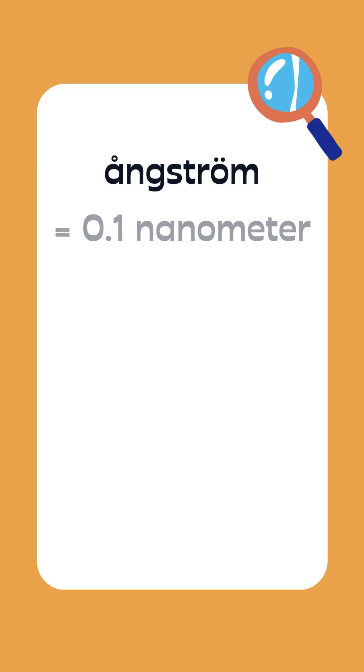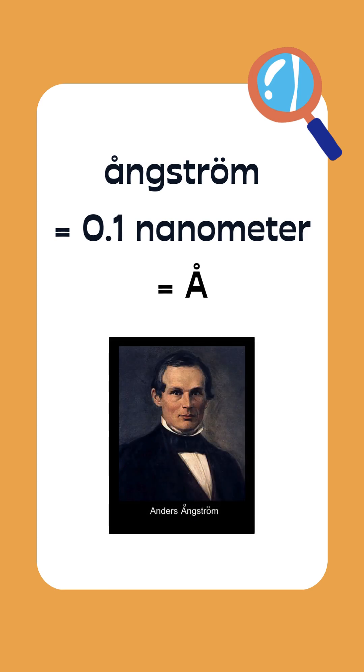One of the units that structural biologists use to describe resolution are called angstroms. An angstrom is one-tenth of a nanometer. The symbol is a letter of the Swedish alphabet. The unit is named after the Swedish physicist Anders Ångström, who was born in 1814. The unit was first used in the 1880s to describe the wavelength of light.